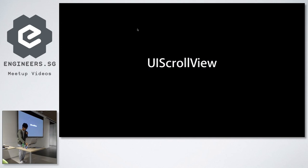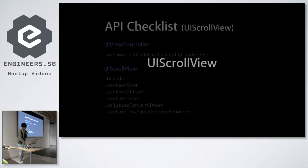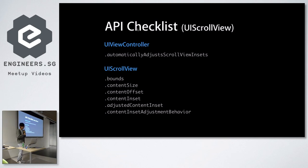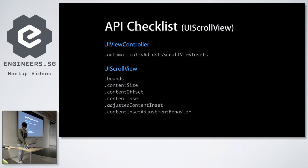And then we have our scroll view. The API for scroll view is also quite easy. There is one automaticallyAdjustsScrollViewInsets under UIViewController, and six under UIScrollView. Bounds, contentSize, contentOffset, and contentInset are quite commonly used every day. There is one more newly added API called adjustedContentInset, added in iOS 11. And finally we have contentInsetAdjustmentBehavior, which will be our focus for this section.